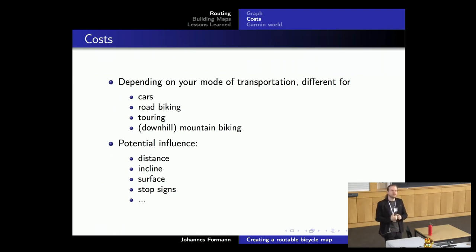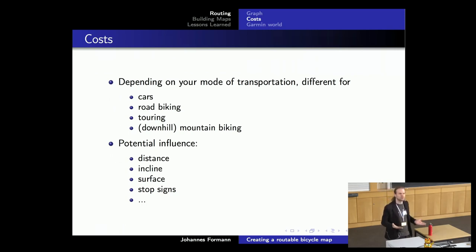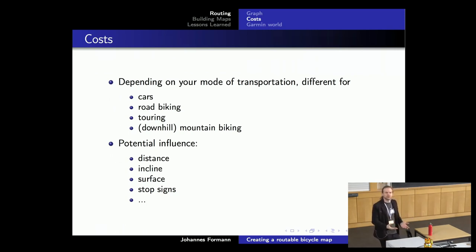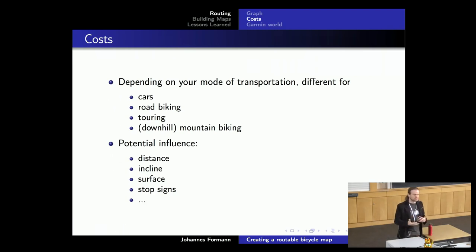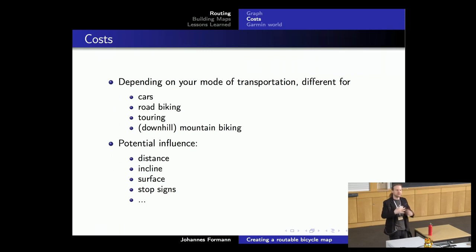What are the potential influences on routing cost? The main one is distance - even if it's the nicest path, you don't want to make a 100-kilometer detour just to get groceries. Then there's incline: going up and down hills while cycling costs a lot of energy, so a small detour that keeps you on the same level is really beneficial. Then there's surface: smooth tarmac is much better than a bumpy road or gravel, which really slows you down. And every time you have to stop at a crossroad, it costs time. How you rate these different influences of course results in very different routing decisions.